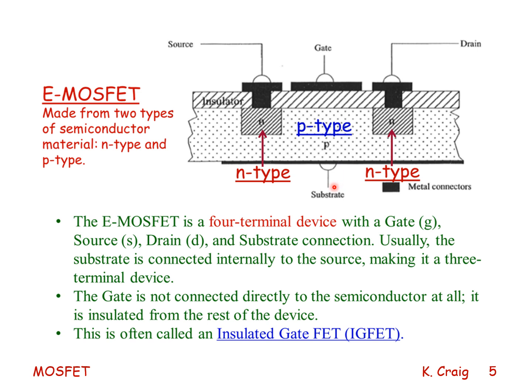Usually the substrate is connected internally to the source, making it a three-terminal device. The gate is not connected directly to the semiconductor at all. It is insulated from the rest of the device with a layer of insulation. That's why this is often called an insulated gate field effect transistor — an IGFET.